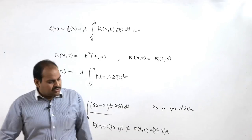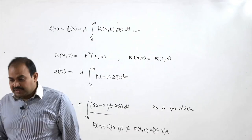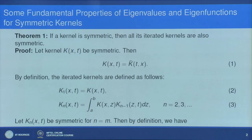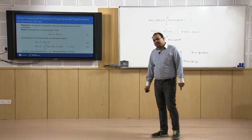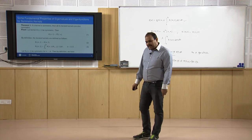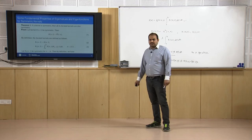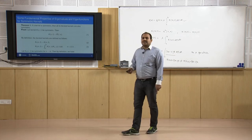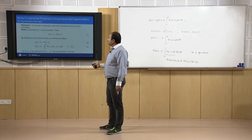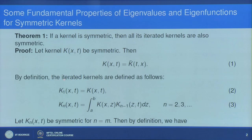The first result, which is very obvious, is that if a kernel is symmetric then all its iterated kernels are also symmetric. Recall we discussed methods to solve the Fredholm integral equation of second kind — the separable kernel method and the method of successive approximations — where we introduced the concept of the iterated kernel.